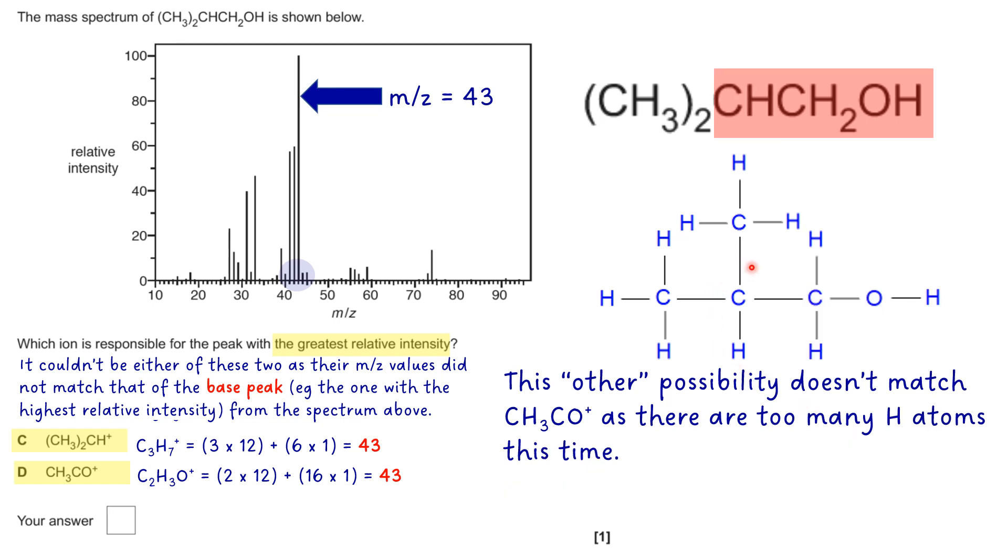Let's have a look at the other possibility, which is this part here. This time we've got too many hydrogens. We've got 1, 2, 3, 4. And in our option for D, we've only got 3. So that's not going to work either.